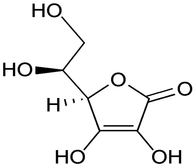Substances that have the ability to reduce other substances — causing them to gain electrons — are said to be reductive or reducing, and are known as reducing agents, reductants, or reducers. The reductant transfers electrons to another substance and is thus itself oxidized. Because it donates electrons, the reducing agent is also called an electron donor. Electron donors can also form charge transfer complexes with electron acceptors.